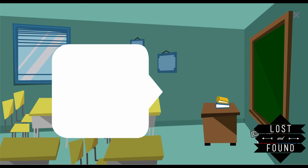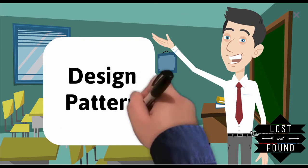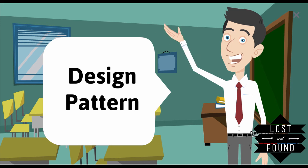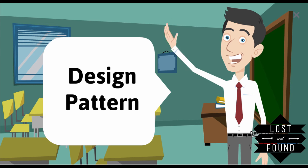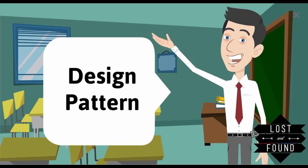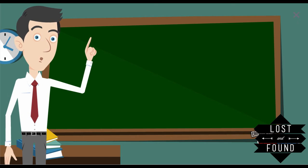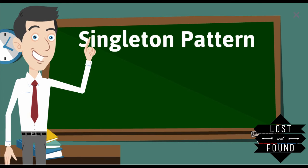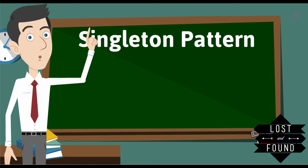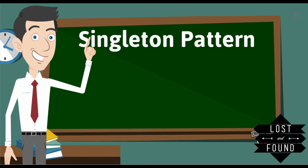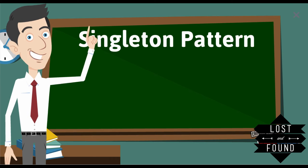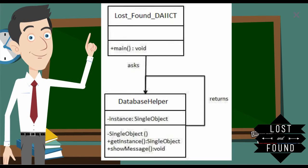Now let's look at design patterns. Design patterns represent best practices used by experienced object-oriented software developers — they are solutions to general problems found during software development. In our lost and found system, we identified some commonly used design patterns. First, the Singleton pattern: we have created one database connection class that retrieves an instance of a class; if no instance exists, it creates one and returns it. There is a database helper class with an instance of a single object type and methods getInstance and showMessage.